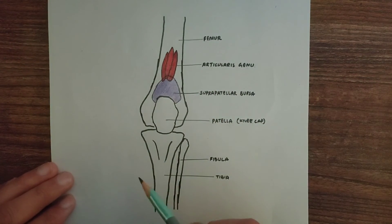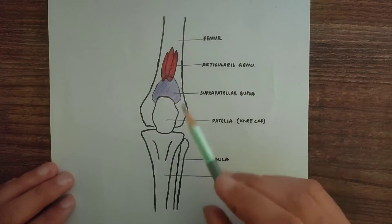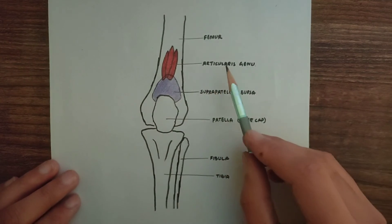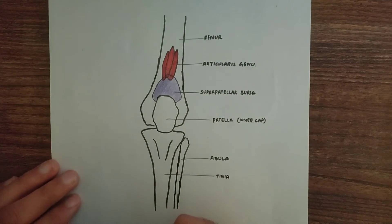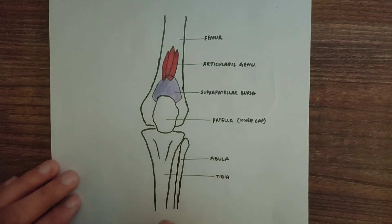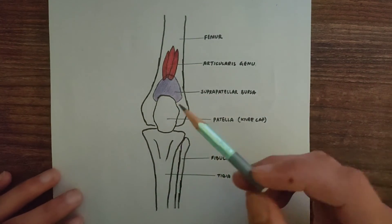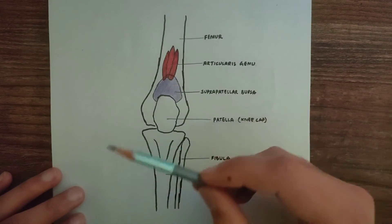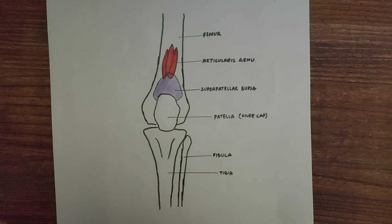Arterial supply to Articularis genu is by the lateral femoral circumflex artery. And Articularis genu muscle helps in pulling up the suprapatellar bursa during extension of knee, so it prevents the damage of this suprapatellar bursa.